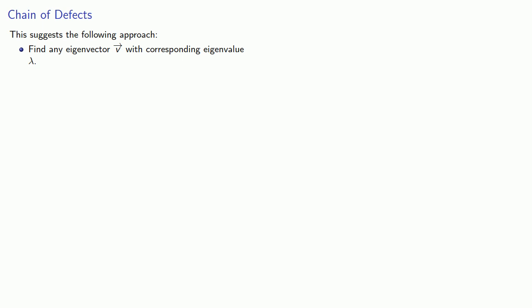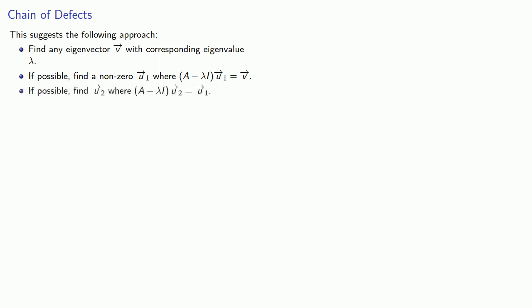This suggests the following approach: find any eigenvector v with corresponding eigenvalue lambda. Then, if possible, find a non-zero vector u1 where (A - λI) u1 is our eigenvector. And again, if possible, find u2 where (A - λI) u2 gives us u1, and so on. Remember we're interpreting matrix multiplication as a linear transformation, so generalized eigenvectors are vectors that will eventually map onto the eigenvector.